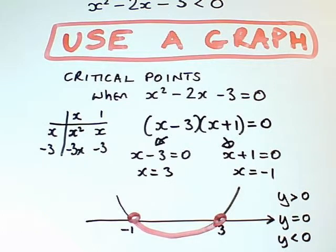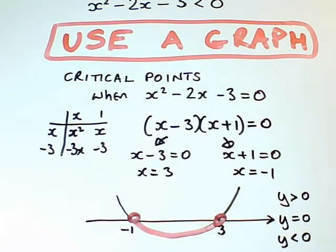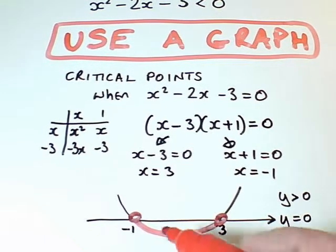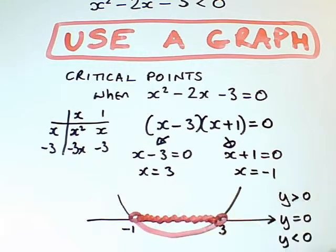So the x's I want. So that was looking vertically, deciding when the graph, when y is less than 0. But I now want the x's that that works for. So the bit of the x-axis I want is, again, this bit in between.